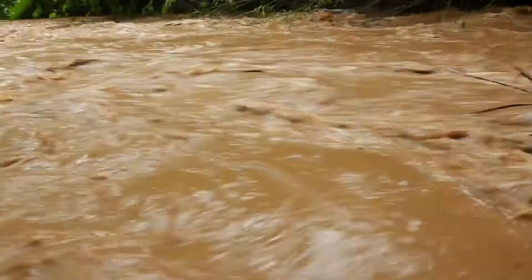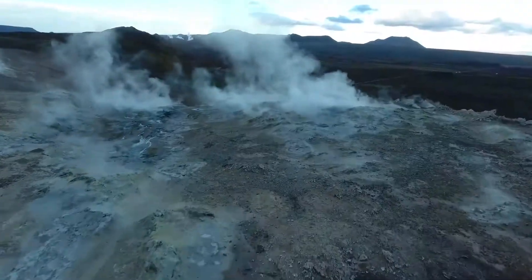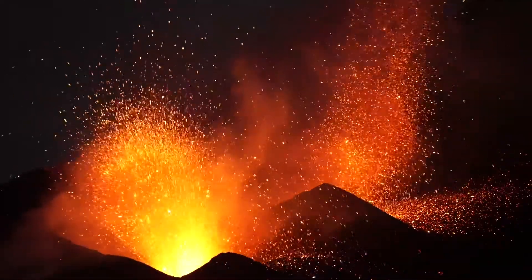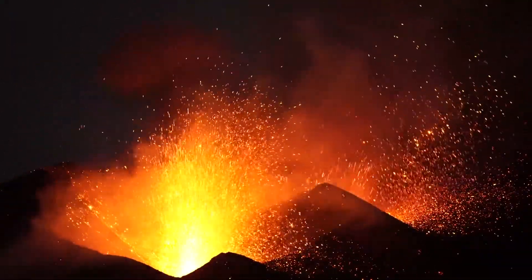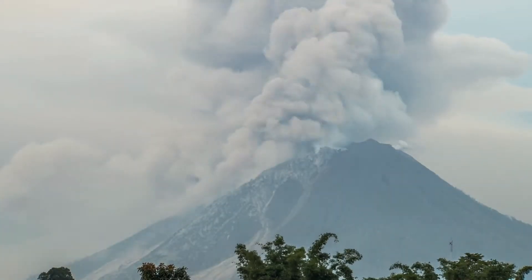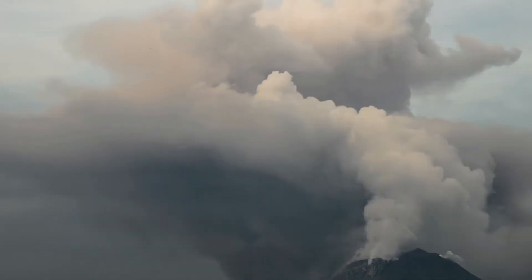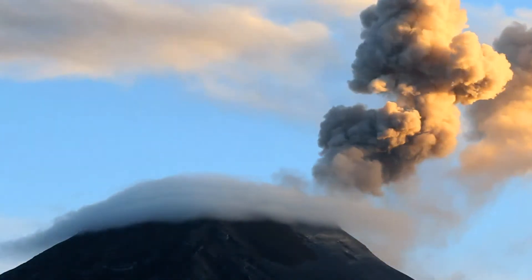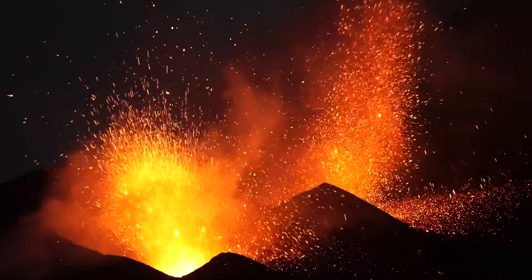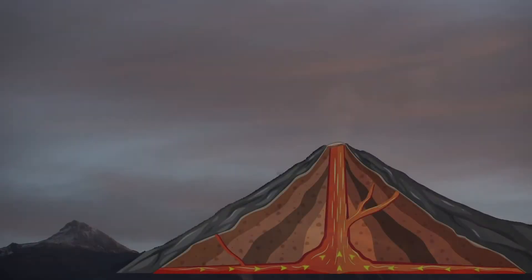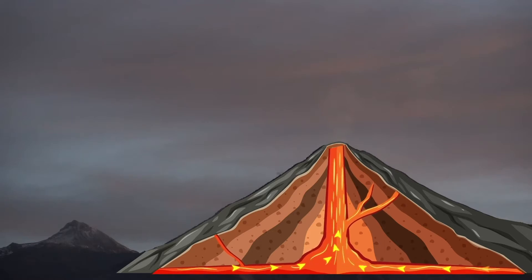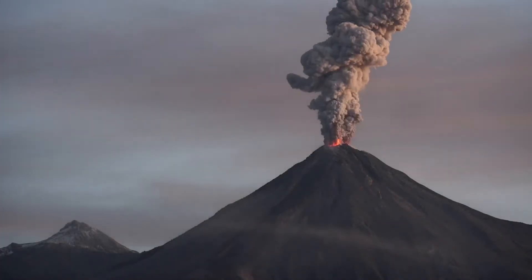Natural events and processes can cause rapid changes to the Earth's surface. One such event is a volcanic eruption. A volcano is an opening in the Earth's surface, caused when molten rock, called magma, pushes up from beneath the Earth's surface. A volcanic eruption occurs when the magma bursts through the opening and flows onto the Earth's surface as lava.